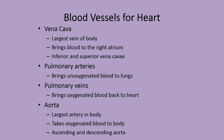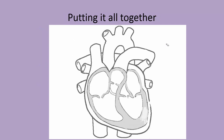The vena cava is the largest vein of the body — make sure you know this for quizzes, tests, and midterms. It brings blood to the right atrium and has an inferior portion from below and a superior portion from above the heart. The pulmonary artery brings unoxygenated blood away from the heart to the lungs. The pulmonary vein brings oxygenated blood back to the heart. The aorta is the largest artery in the body, taking oxygenated blood to the body, segmented into ascending and descending portions.